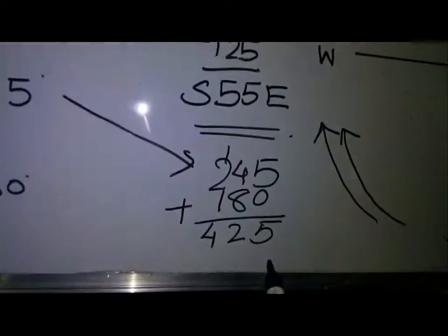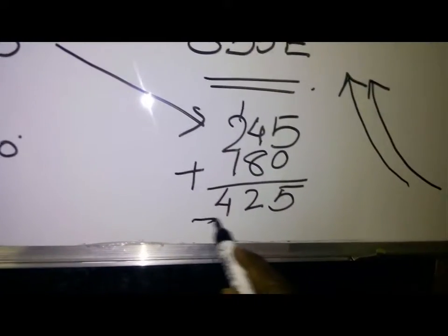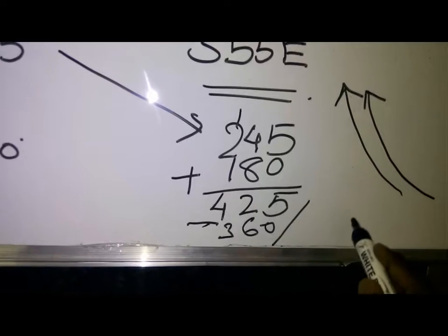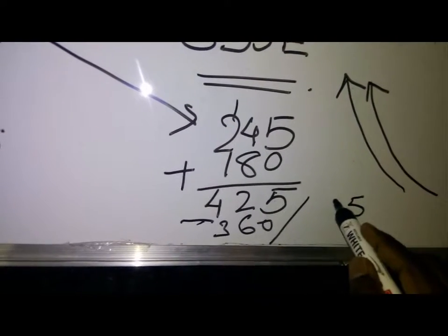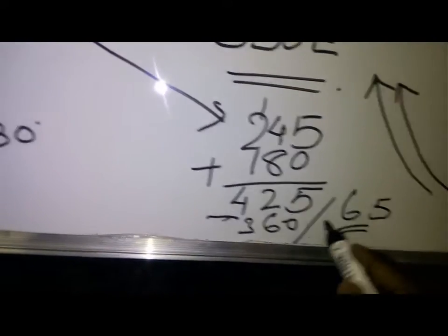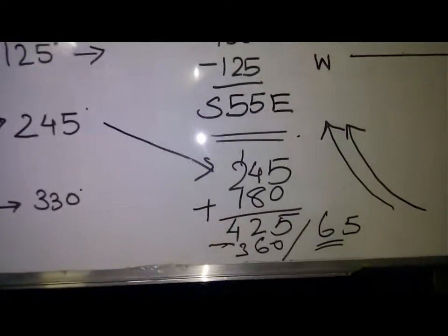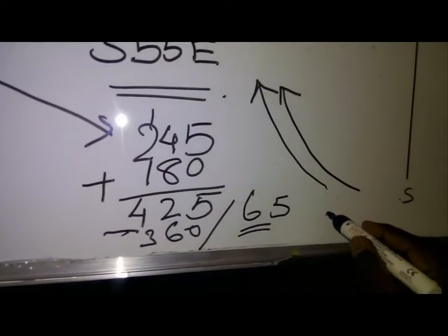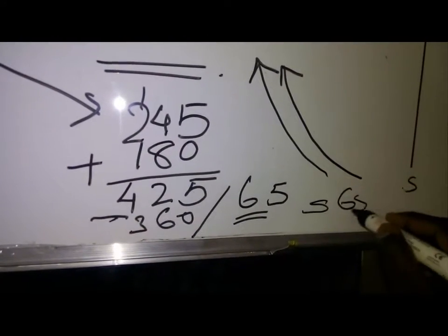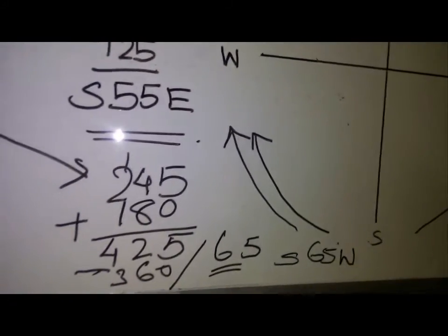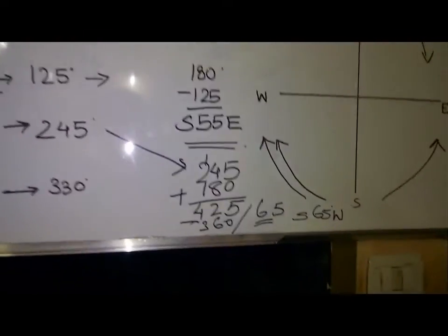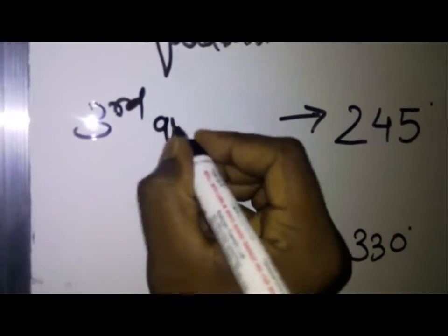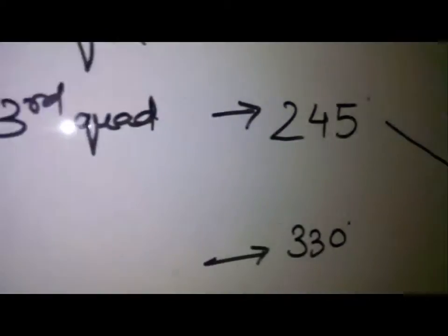Now you can see that it has gone above 360. So just subtract it from 360 and you will get the answer as 65 degrees. The direction is southwest, so it will be south 65 degrees to the west. That comes in the third quadrant.